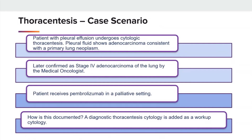Our case scenario starts with a patient with pleural effusion who undergoes cytologic thoracentesis. The pleural fluid shows adenocarcinoma consistent with a primary lung neoplasm, later confirmed as stage 4 adenocarcinoma of the lung by the medical oncologist. The patient receives pembrolizumab in a palliative setting. A diagnostic thoracentesis cytology is added as a workup cytology. When it's diagnostic, a small sample of pleural fluid is removed and sent for analysis to help determine the type of fluid — it is not treating the patient for symptoms.